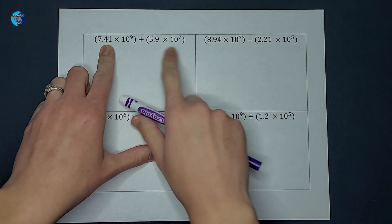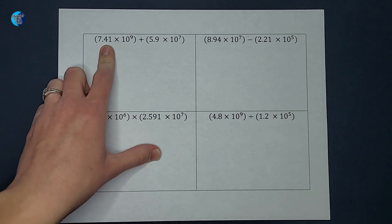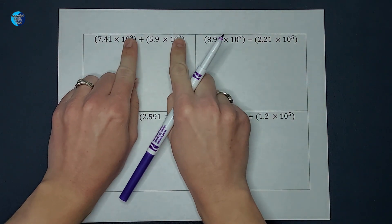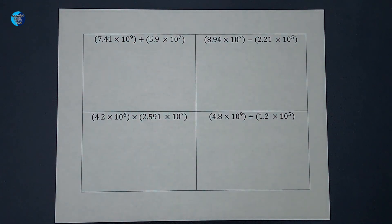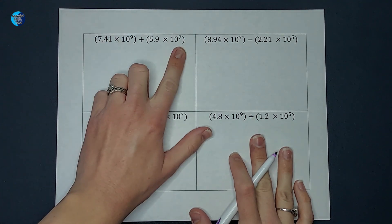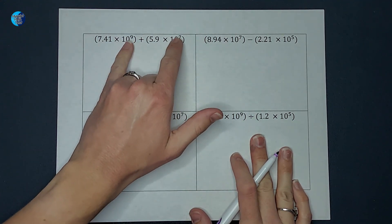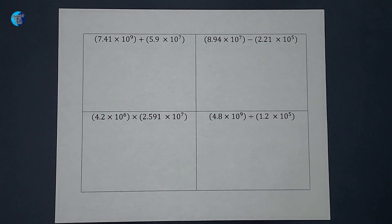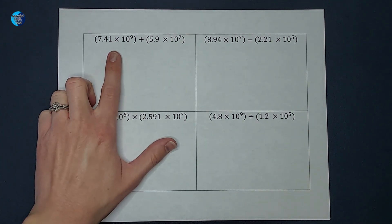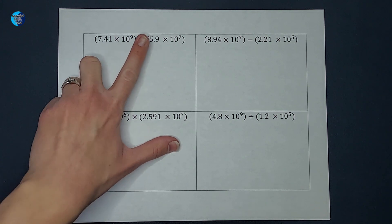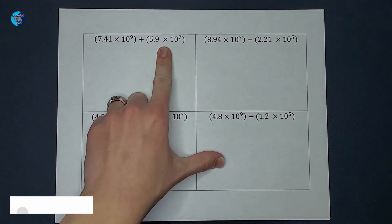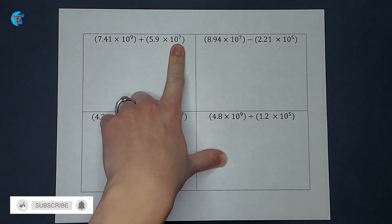Now to add these, scientific notation makes this easier. To add, I need the exponents on these tens to be the same. Multiplying and dividing is different — we'll talk about that when we get there — but for adding and subtracting I need the exponents to be the same. I need to change one of these numbers to either 10 to the seventh or 10 to the ninth.